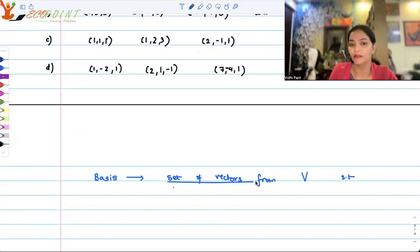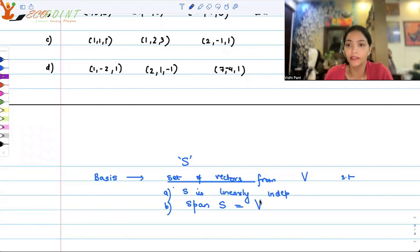Let me call that set S. Two axioms are satisfied. Two conditions are always satisfied: number one, S is linearly independent, and number two, the span of S is the entire V. That is, S, the set of linearly independent vectors, is generating the entire space.